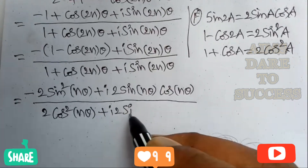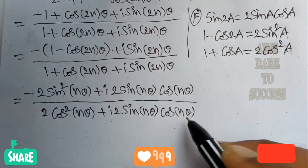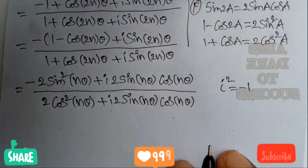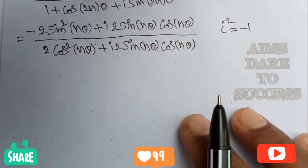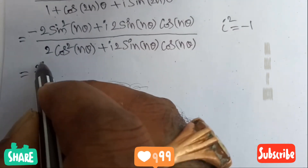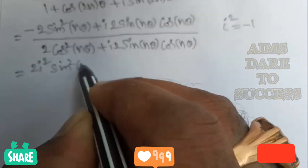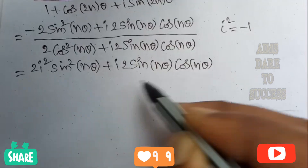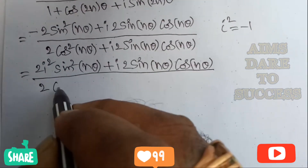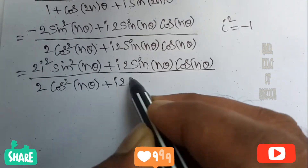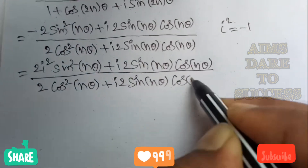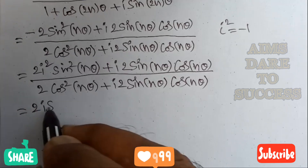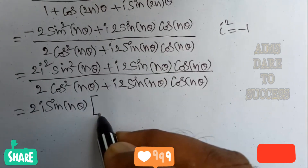Placing i into the sine 2n theta term: 2 sine n theta cos n theta. Now, in the numerator, in place of the minus sign, we write i square (since i square equals minus 1). The denominator remains: 2 cos square n theta plus i times 2 sine n theta cos n theta. Taking 2, sine n theta, and i as common from the numerator gives 2i sine n theta as the common factor.